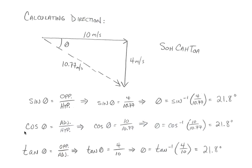Using cosine instead: cosine of theta equals adjacent over hypotenuse, so theta equals the inverse cosine of 10 over 10.77, and I still get 21.8 degrees — same triangle. Using tangent: tangent of theta equals opposite over adjacent, so theta equals the inverse tangent of 4 over 10, and once again I get 21.8 degrees.